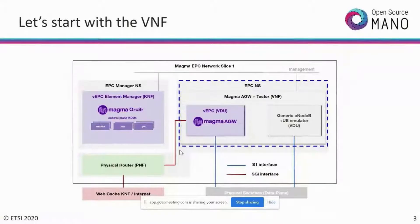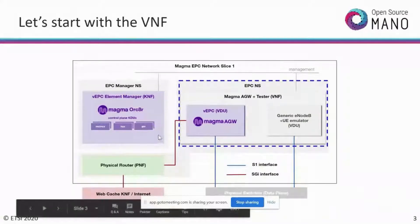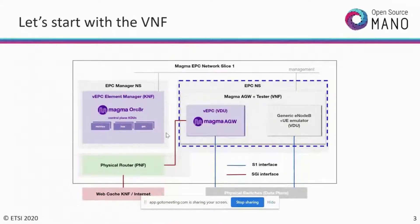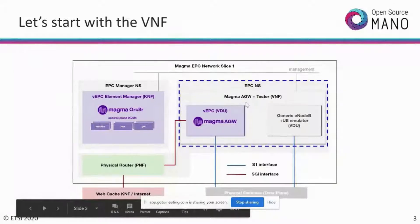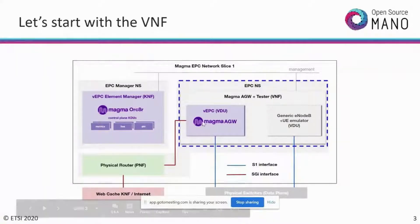For context, we were previously looking at a network slice orchestrated from OSM. This slice is built on open source — specifically Magma — and has different elements. There are two different network services: the first is built on KNF using KNF-basis, and the second is the Magma access gateway EPC element. The grey box consists of your Magma EPC VNF plus your KNF.